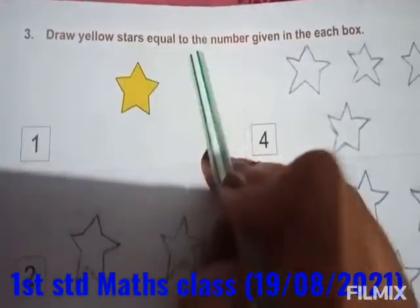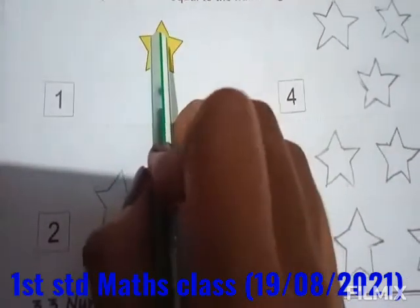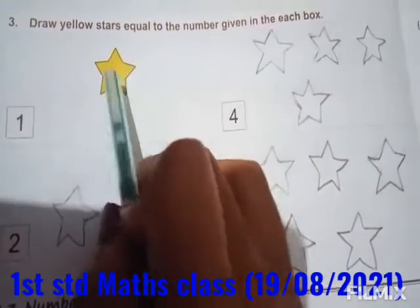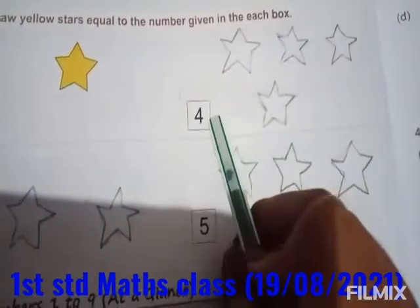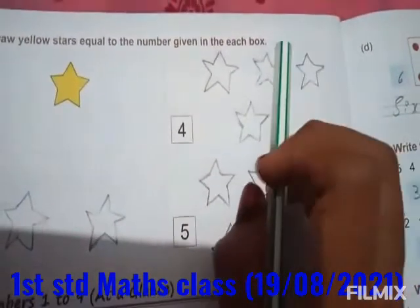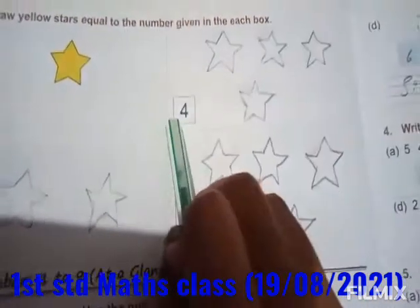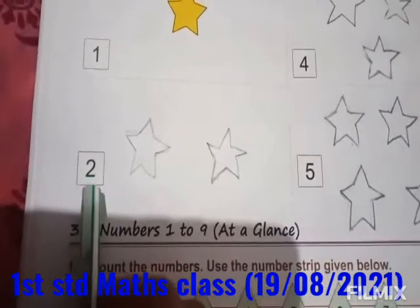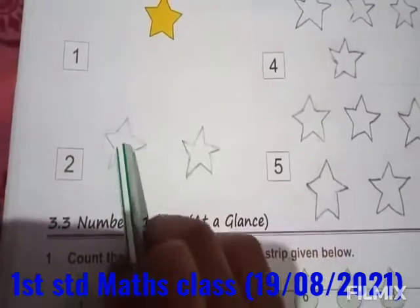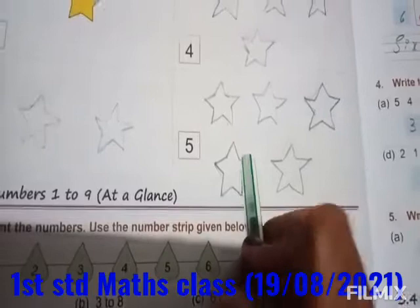Third activity: Draw yellow stars equal to the number given in each box. You have to draw what has been given in the box — numbers. For 1, draw 1 star and color it yellow. For 4: 1, 2, 3, 4 — I have drawn them. You have to draw in your textbook and color with yellow. For 2: draw 1, 2 stars. For 5: draw 1, 2, 3, 4, 5 stars and color with yellow.